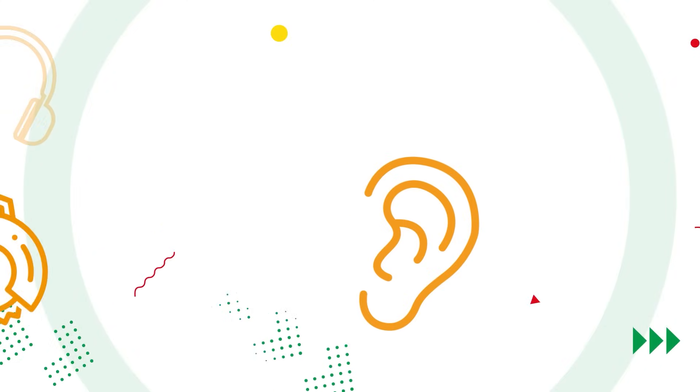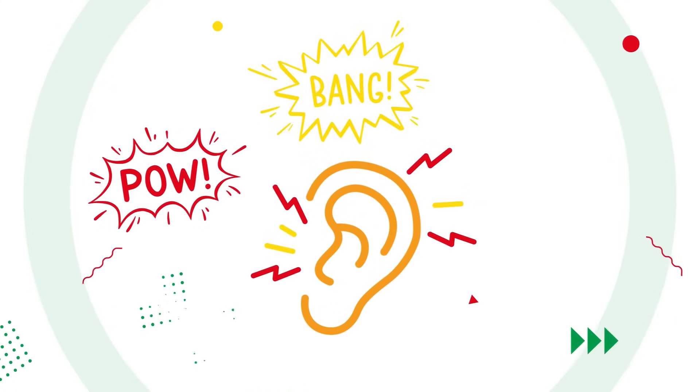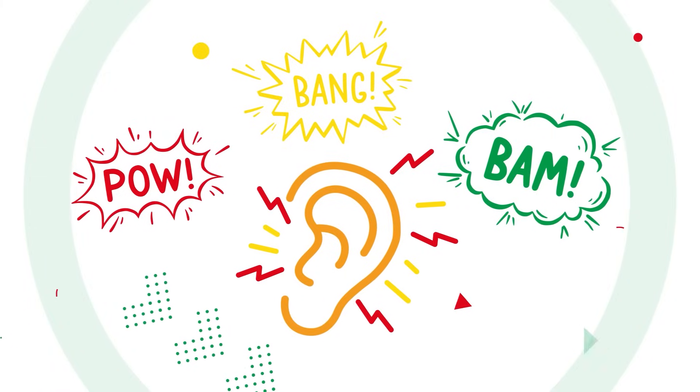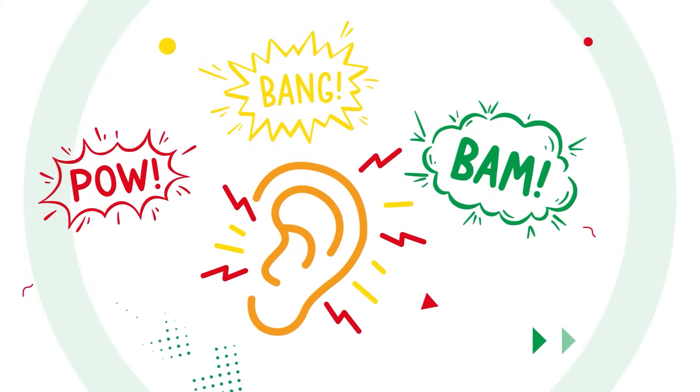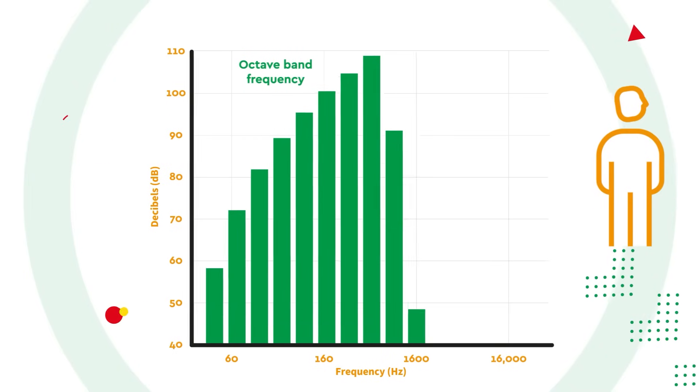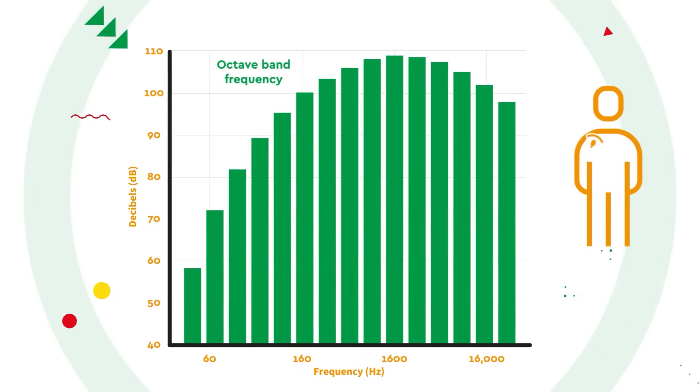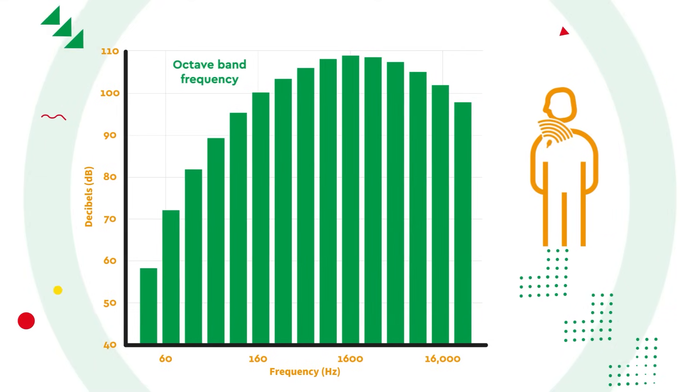C-peak noise is the maximum decibel level associated with sudden crashes or bangs. It is an important measurement as peak sound can cause immediate long-term damage to the ear. Octave band frequency analysis is an important measurement when selecting hearing protection as it records the noise intensity at a range of individual frequencies.